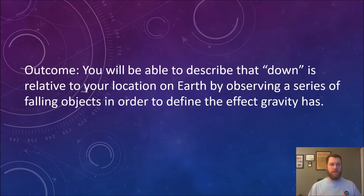In this lesson, you'll be able to describe that down is relative to your location on Earth by observing a series of falling objects in order to define the effect that gravity has. Now to do this, we're first going to review forces, we're going to look at gravity and its effects, and then we're going to do a thought experiment about what exactly down means. And we're also going to be thinking about what would happen if you could drop a ball straight through Earth.